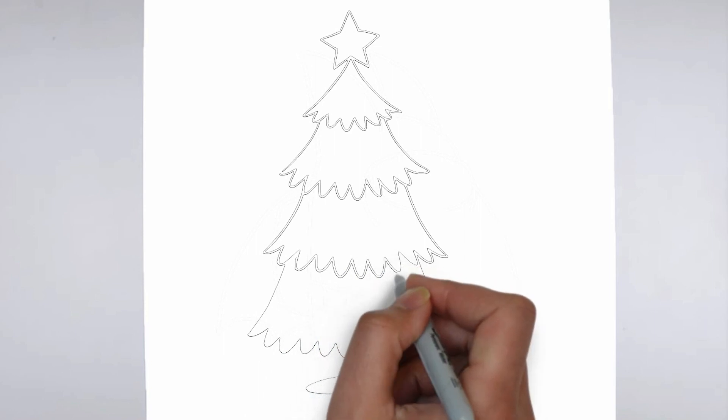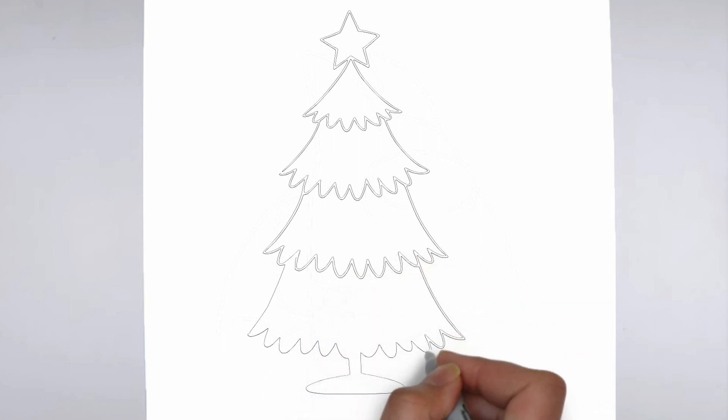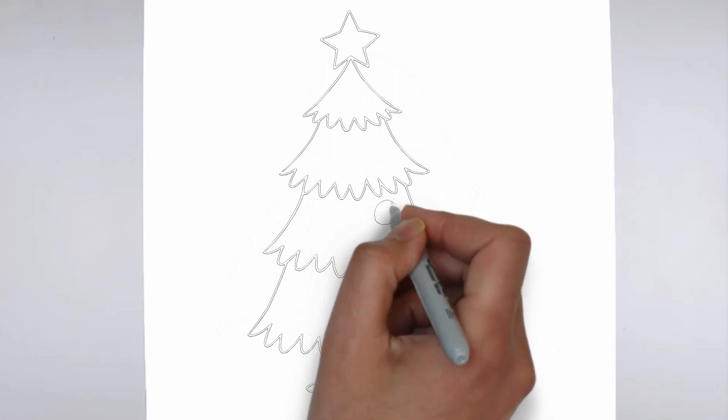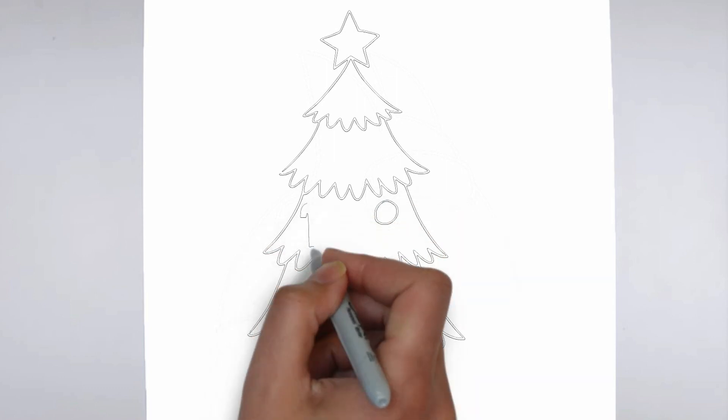Now it's time to shade your drawing. Start by identifying the light source in your reference image or object, and use that as a guide for where to add shadows and highlights. Build up the shading gradually, using a variety of pencil pressures and techniques to create depth and texture.